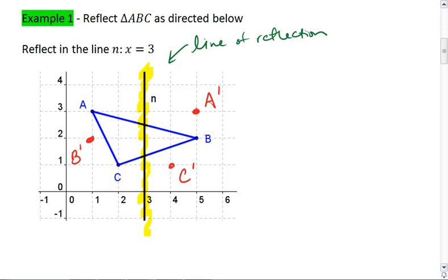We get C prime. If we connect these points with line segments, we get the reflected triangle, so the image, which is triangle A prime, B prime, and C prime.